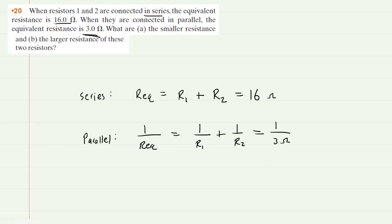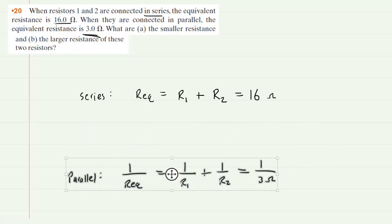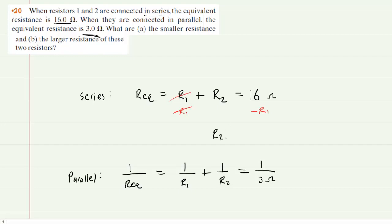Now to do that, we might wish to take the series equation and solve that for R2. And so to do that, we will subtract R1 from both sides. This will cancel it on the left side and we can see now that R2 is equal to 16 minus R1.